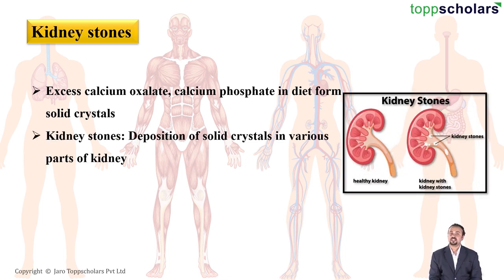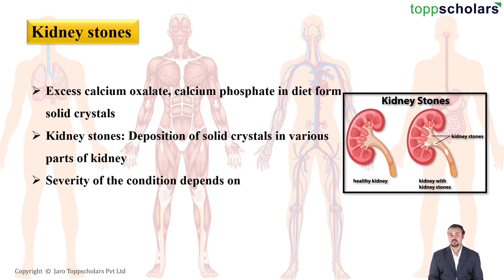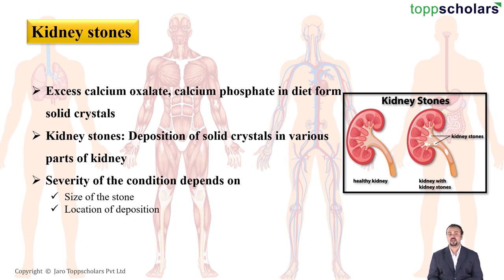These stones can deposit in various parts of the urinary system — in the kidney, in the ureter, or sometimes even in the urinary bladder. The severity of the condition will depend upon the size of the stone as well as the location where the stone has deposited.